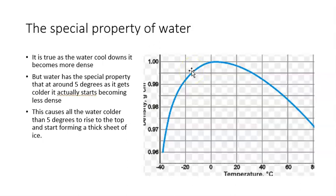And this is the reason why they start forming a thick sheet of layers, because all the cold water moves to the top and starts becoming part of that thick sheet of ice at the top.